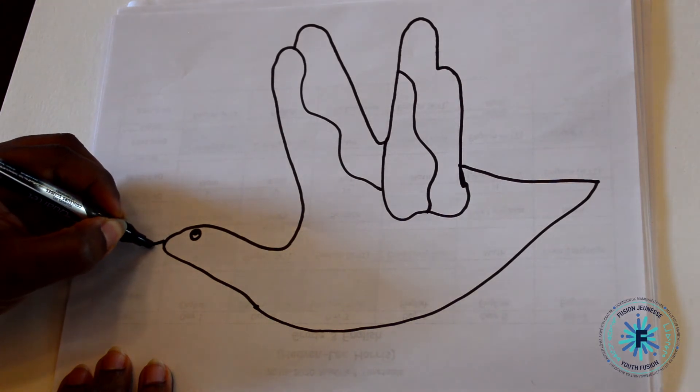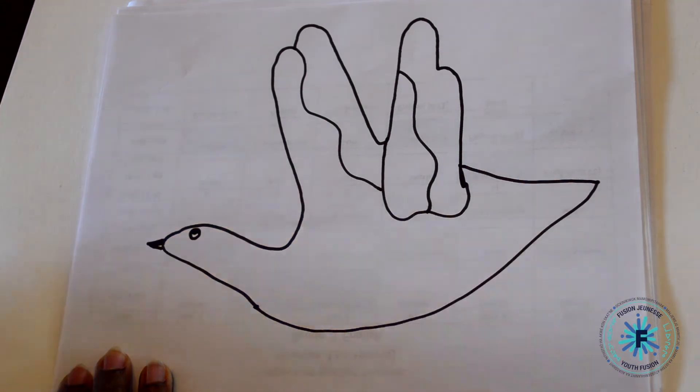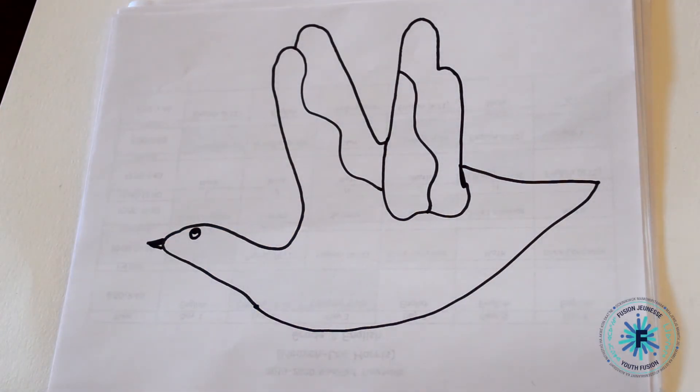For the beak, draw a small triangle at the edge of the thumb and pass a line in the middle of the triangle.